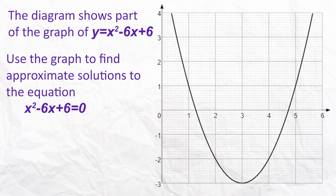Right, let's look at the first question. The diagram shows part of the graph of y equals x squared minus 6x add 6, and we're being asked to use the graph to find estimates of the solutions to the equation x squared minus 6x add 6 equals 0. All you have to do is read off what the x-coordinates are when you are at 0 on the y-axis — in other words, those two points there.